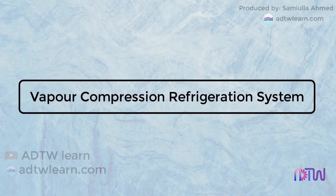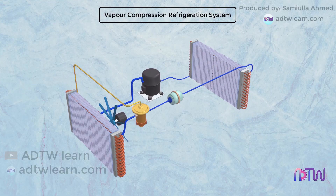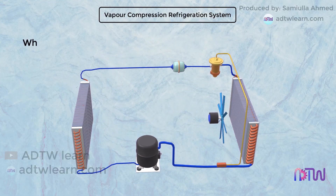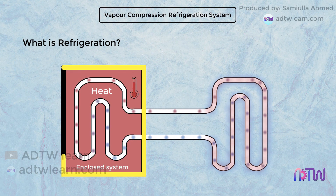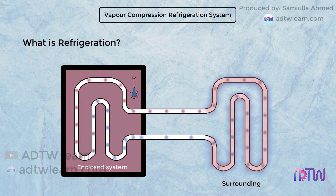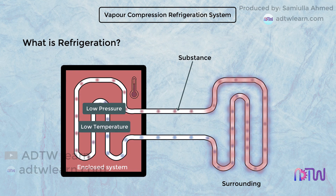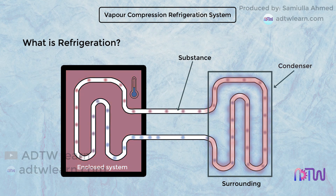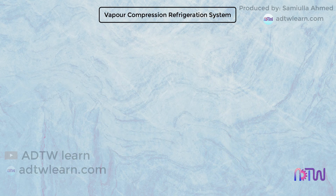Vapor compression refrigeration system. In this video, we will understand how simple vapor compression refrigeration systems work. Refrigeration is the process of removing heat from an enclosed system and discharging it to the surrounding, maintaining the space at a temperature lower than the surrounding. A substance that flows through the refrigeration system, acting as a medium which absorbs heat from the evaporator at low pressure and temperature by evaporation, and carries it to the condenser where it discharges heat to the surrounding at higher temperature and pressure, is called a refrigerant.